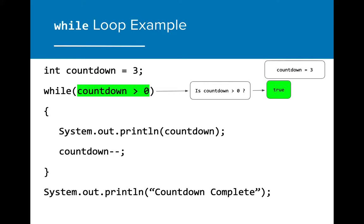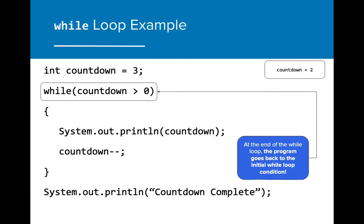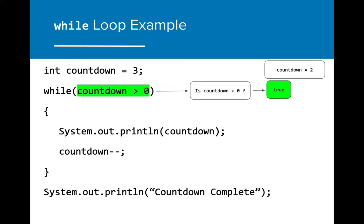On the first pass through, the expression evaluates as true, as countdown is greater than zero. The while loop now will execute. The first action is to print the value of countdown, which in this case is three. Next, the value of countdown is reduced by one. This is a crucial step in the program. Now the code within the while loop has finished. The program will go back to the initial while loop condition to test if the condition is still true. Since the condition is still true because two is greater than zero, the while loop will run again.